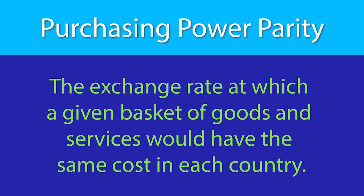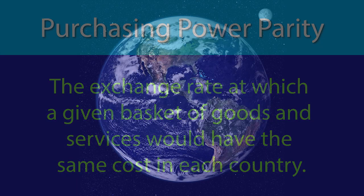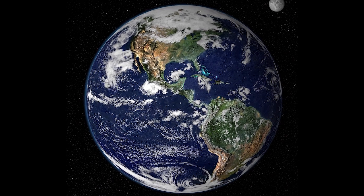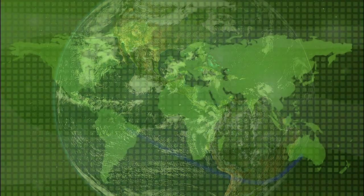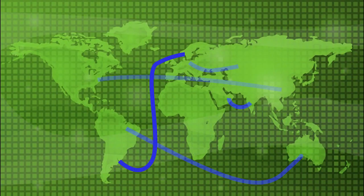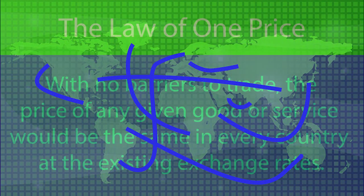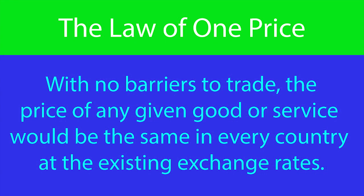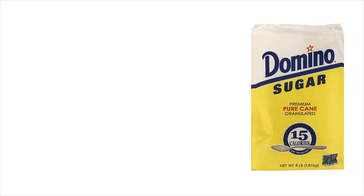The purchasing power parity exchange rate is the exchange rate at which a given basket of goods and services would have the same cost in each country. If every country could trade goods and services around the globe with no significant transportation costs, tariffs, or other barriers to trade, the law of one price suggests that the price of any given good or service would be the same in every country at the existing exchange rates.